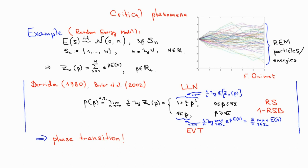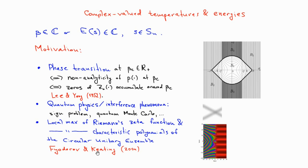The motivation to consider complex valued inverse temperatures or complex valued random energies is manifold. One motivation comes from the Li-Yang theory of phase transitions, where at a phase transition point like square root of two from the previous slide, the analyticity of log partition function breaks down. This can only happen because zeros of the partition function accumulate and touch the real line at the point of phase transition. Another motivation comes from interference phenomena or specifically from quantum physics. And last but not least, from the relationship between local maximum of Riemann zeta function on the critical line and local maximum of characteristic polynomials of the circular unitary ensemble, which was put forward by Fyodorov and Keating.